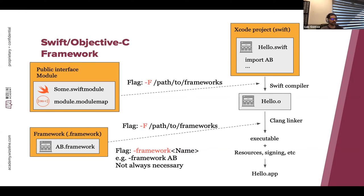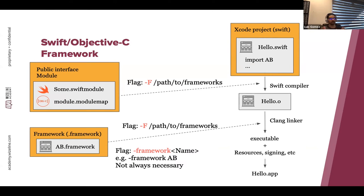The flags for linking a framework are different: -F (capital F) specifies where the framework is located, and the flag 'framework' specifies the framework name — this is not always necessary, only when the framework name differs from its module name.